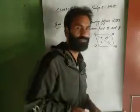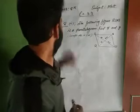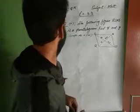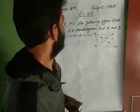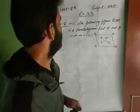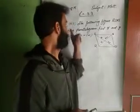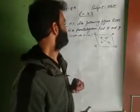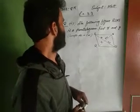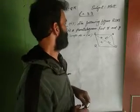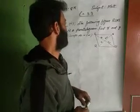Assalamu alaikum warahmatullahi wabarakatuh. Today I am going to talk about exercise 3.3, question number A. The following figure RUNS is a parallelogram. Find X and Y — lengths are in centimeters.